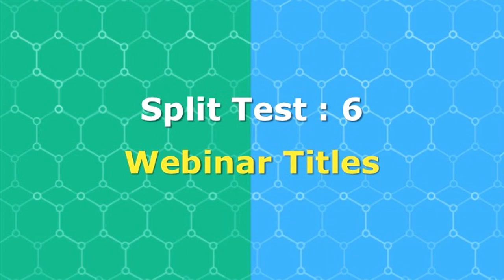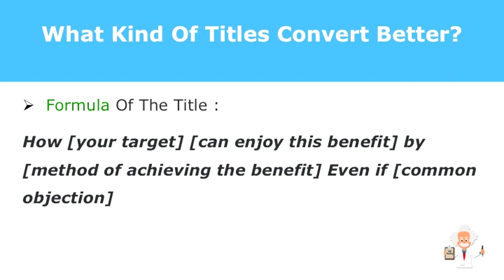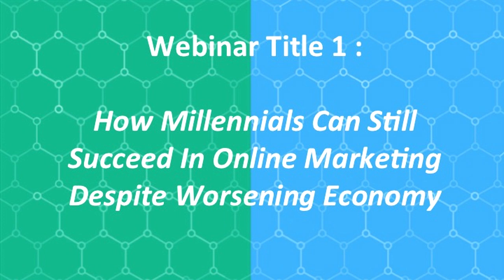Let's explore the content of your webinar, focusing on the components that provide details and information. How do you ensure your webinar titles look, feel, and sound good? Is there a formula available, or do you just type something and hope it'll work? It turns out there's actually a formula. Here are some examples. The formula is: How your target can enjoy this benefit by method of achieving the benefit, even if common objection.